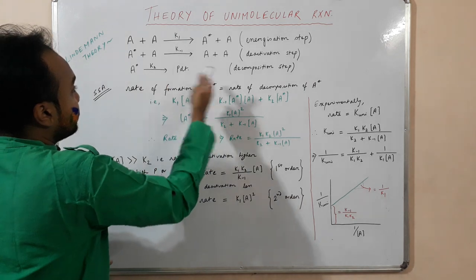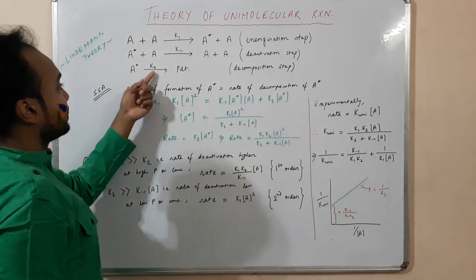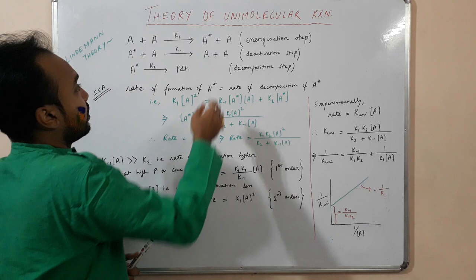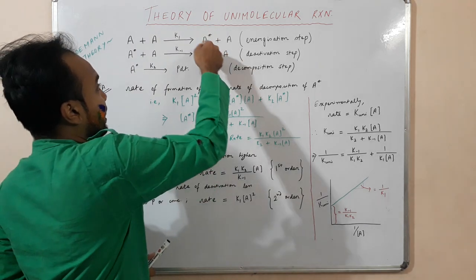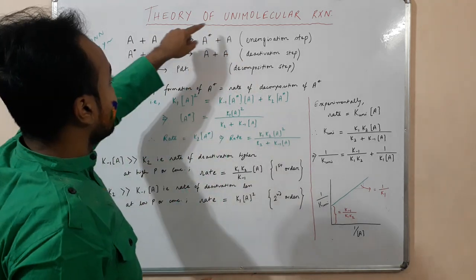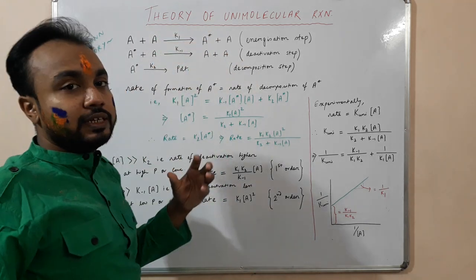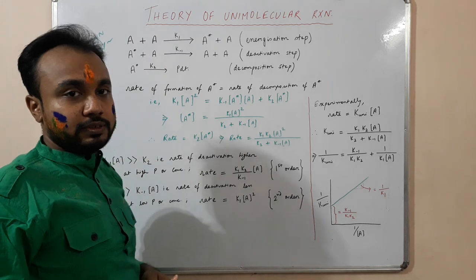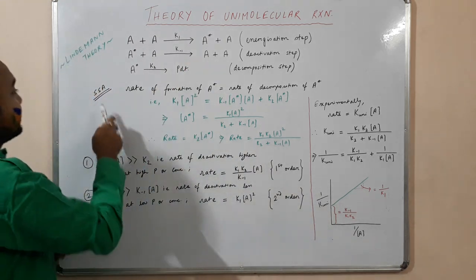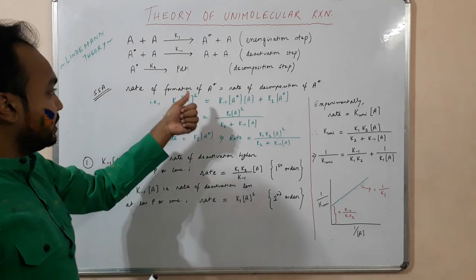The rate constant for the decomposition step is K₂. A* has a transient appearance in this reaction, so we can apply the steady-state approximation to A*.